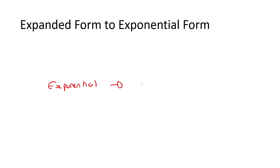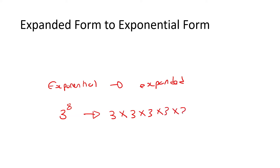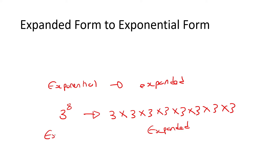In the previous lesson, we looked at exponential form, and what we learned was how to convert that into expanded. Exponential was when you have something like 3 to the 8, where it has an exponent. And what we learned was that that is the same as 3 times 3 times 3 times 3 times 3 times 3 times 3 times 3 — the number 3, 8 times. This is called expanded form, and this one is called exponential.